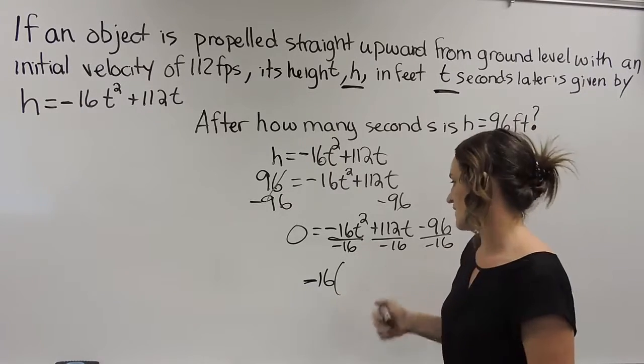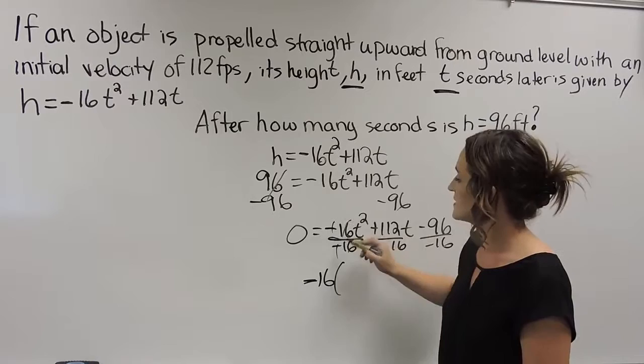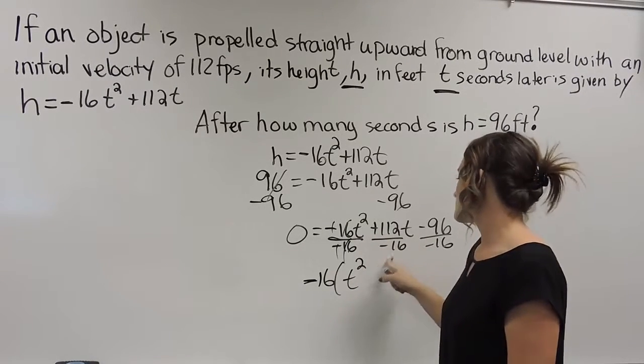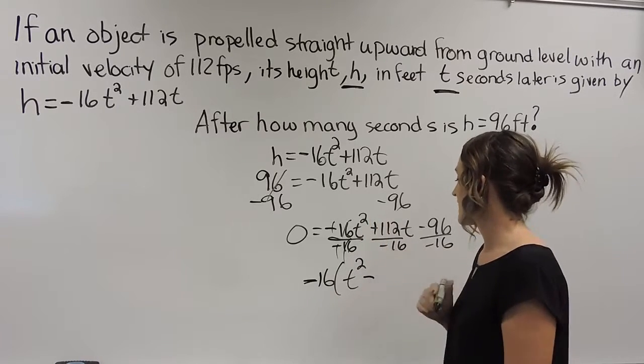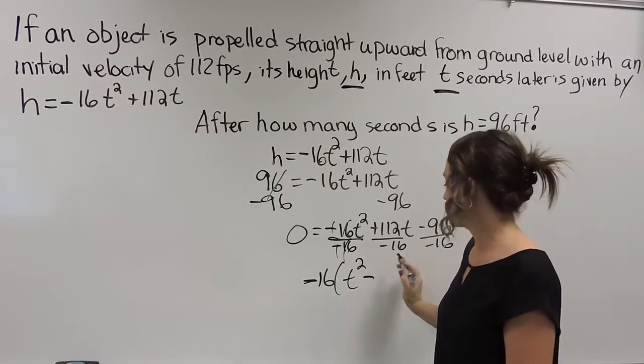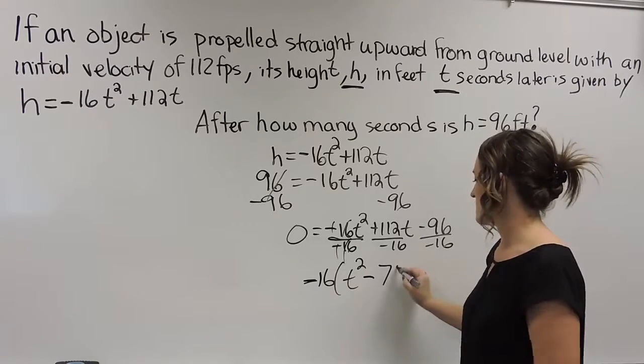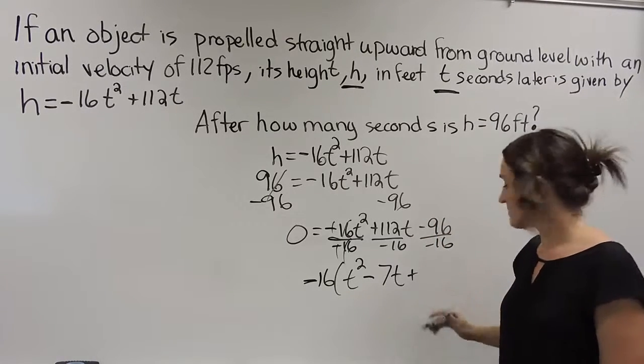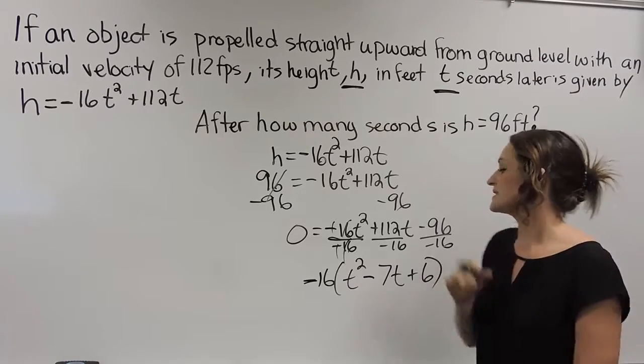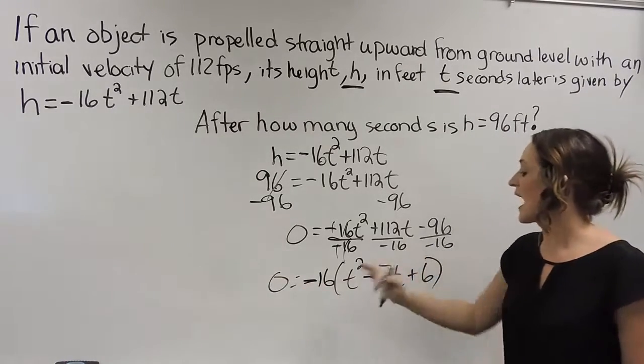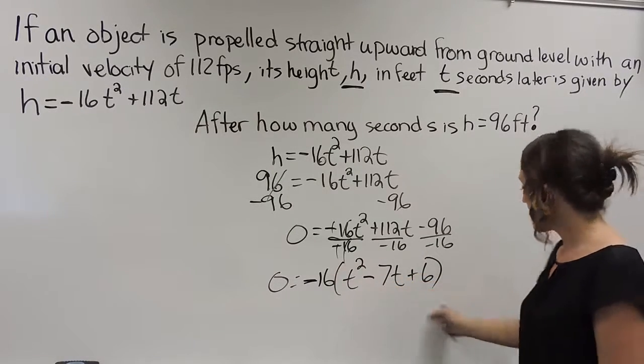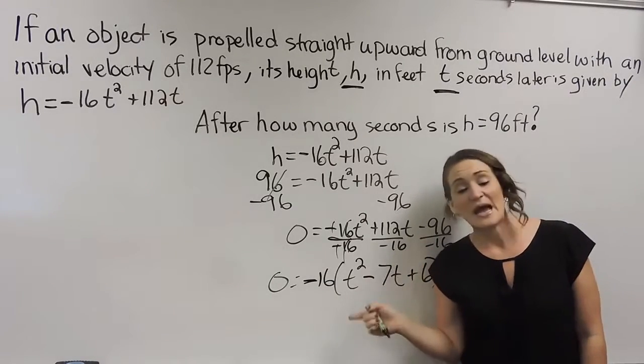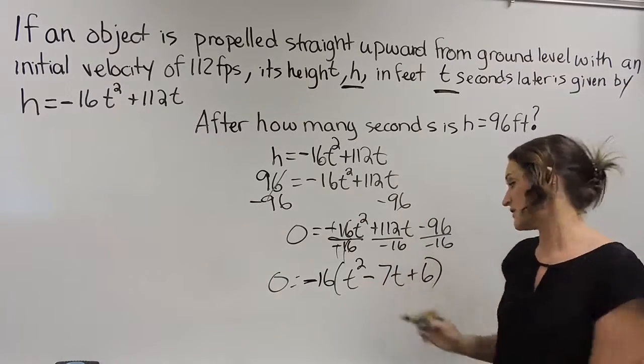So we can figure out what's going to be left over when we pull out the negative 16. So when we divide that out to figure that out, let's see, negative over negative cancels, 16 over 16 cancels, and we can drop down the t². Middle term here, positive over negative is negative. And 112 divided by 16, I believe is 7 there, and drop down the t. And 96 divided by 16 is a 6. So, so far this is what we have. 0 is equal to a negative 16, and then we have our trinomial here. So all we've done so far is pulled out a negative 16 as a greatest common factor here.